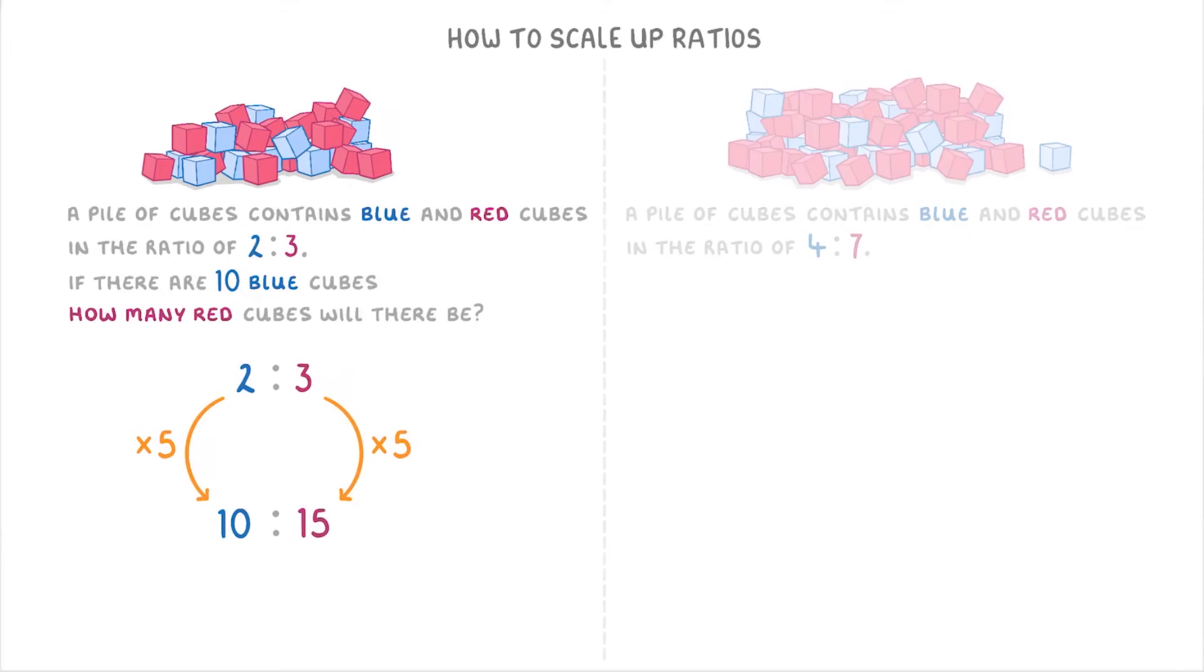As another example, let's try a similar question but with the cubes in the ratio of 4 to 7, and where the question asks us if there are 56 red cubes how many blue cubes will there be. So this time we've taken down our ratio 4 to 7 and we need to put the 56 under the 7 because the red cubes are on the right side. Next we need to figure out what 7 has to be multiplied by to get to 56, which is 8, and so this tells us that we also have to multiply the 4 by 8, which will give us 32. So there would be 32 blue cubes.